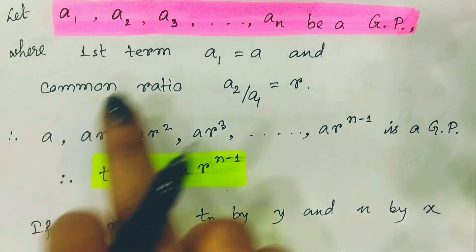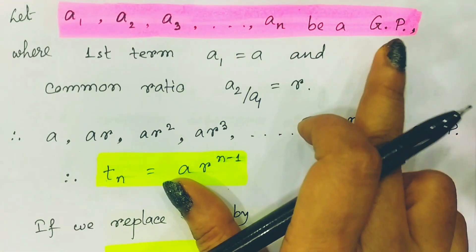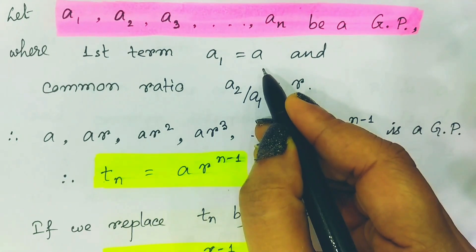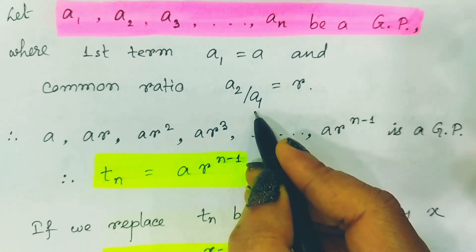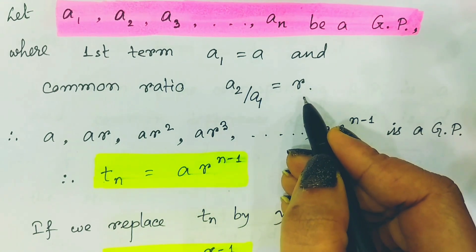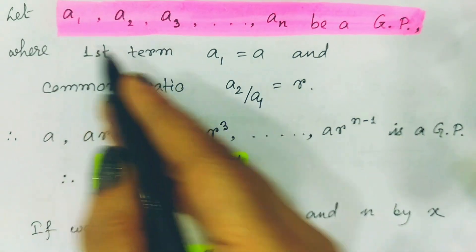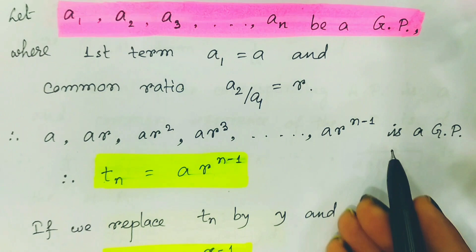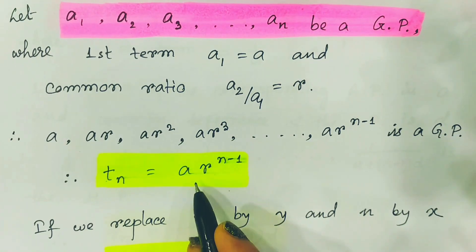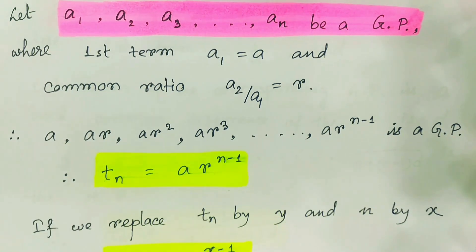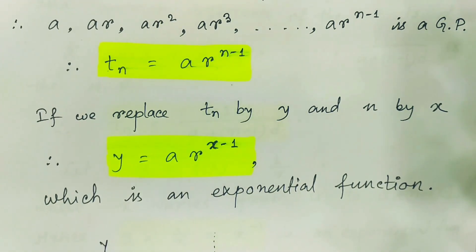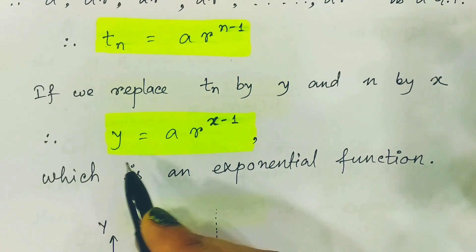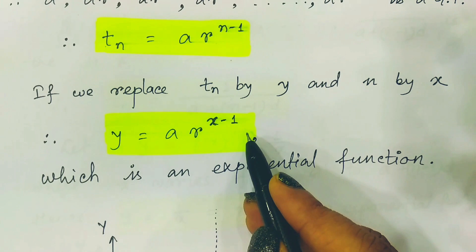Let x1, x2, x3, ..., xn be a geometric progression. Its first term is a1 equals a, and the common ratio is a2 divided by a1 equals r. We can write the GP in the form: a, ar, ar², and so on. Hence its nth term is a times r to the power (n minus 1), which we already know.